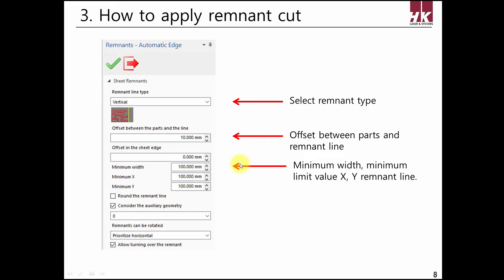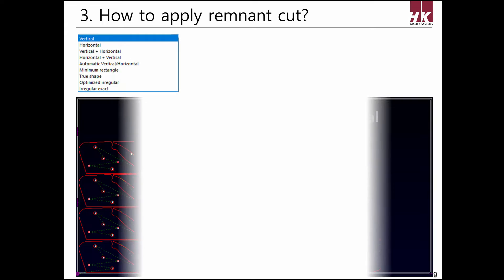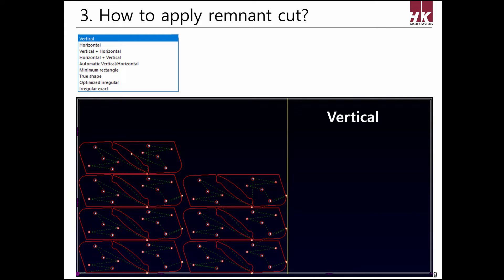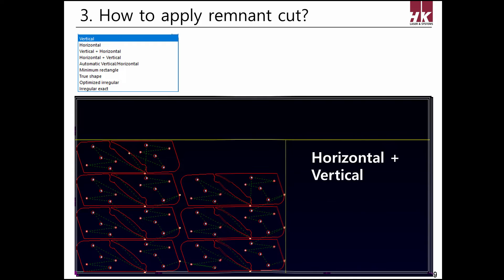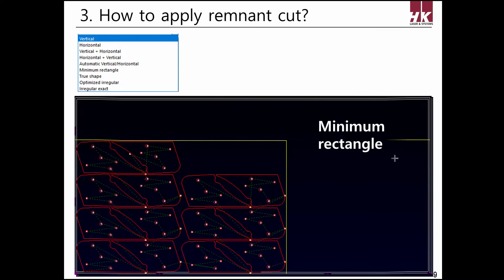The frequently used types of remnant line are: vertical, horizontal, vertical plus horizontal, minimum rectangle, and irregular.